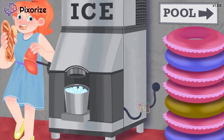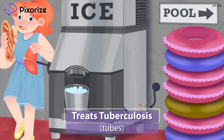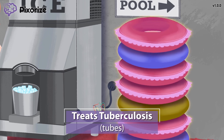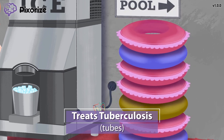Next, let's talk about when isoniazid is used. The ice machine is located next to this pile of pool tubes. Hotels commonly have pools, and it's nice of this hotel to provide pool tubes for the guests. These tubes are our symbol for tuberculosis — tube for tuberculosis. Isoniazid is an anti-tubercular agent, meaning it is used to treat tuberculosis, also called TB.